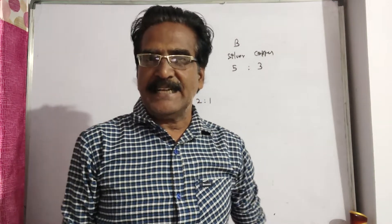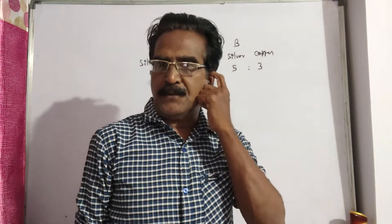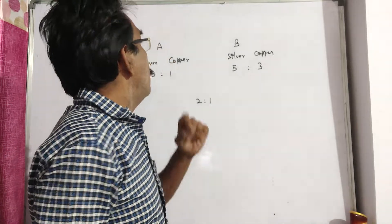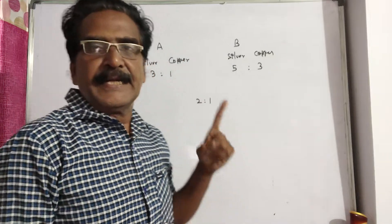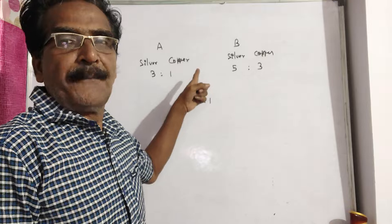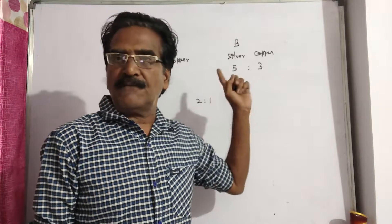Hi friends, good morning. Please look at the next problem in ratio and proportion. See friends, two alloys A and B contain silver and copper in the ratio 3 to 1 and 5 to 3.